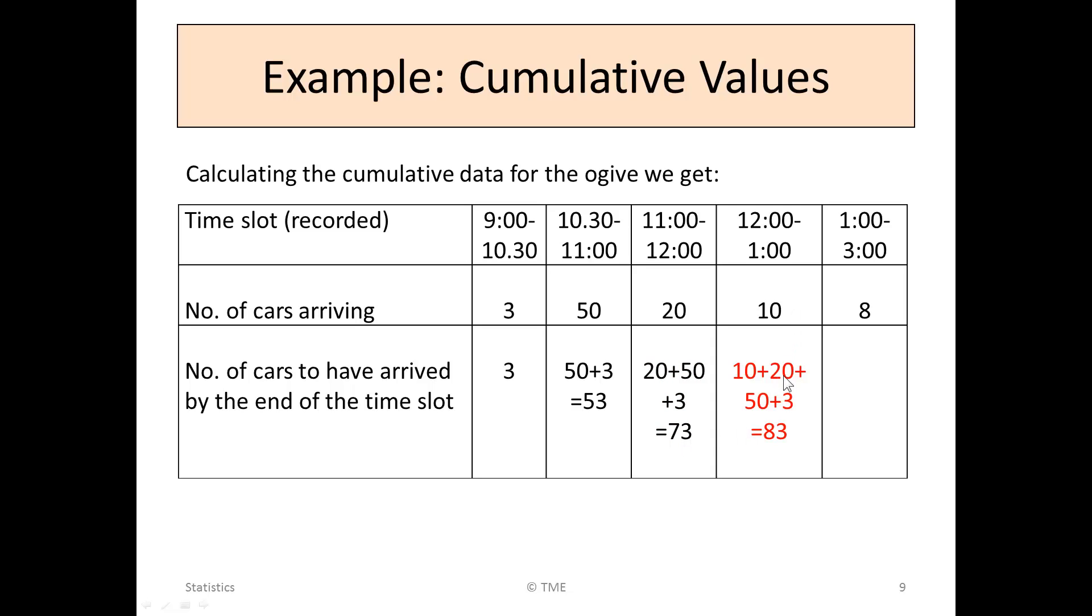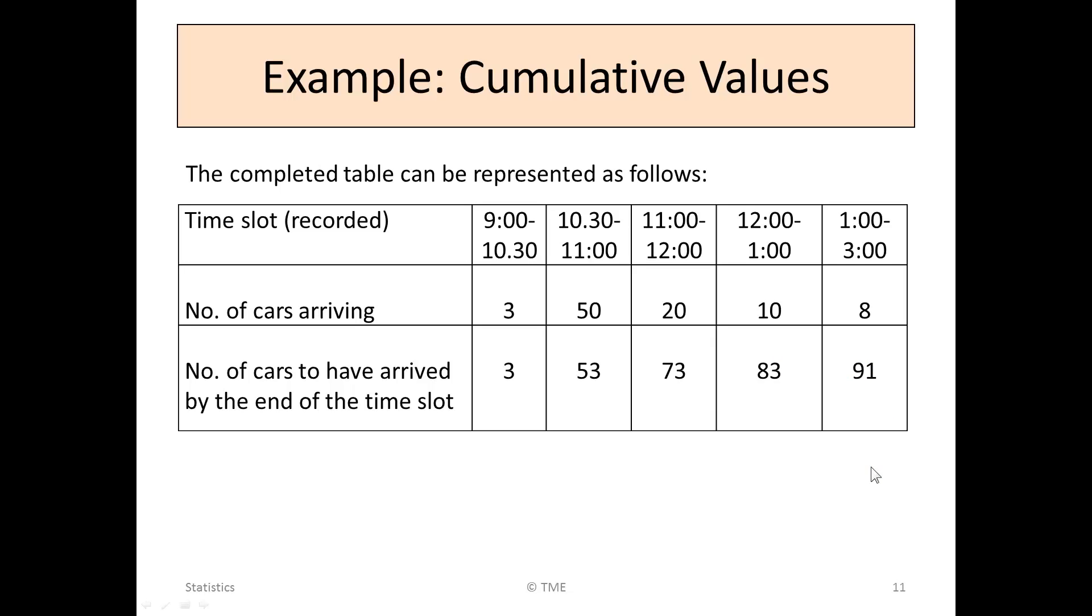Likewise, by 1 o'clock, we have an additional 10, or 83 cars have arrived. And by 3 o'clock, an additional 8, or 91 cars have arrived. We can re-present the data, the cumulative data for each of the time periods. By the end of 10:30, we have three cars. 11, we have 53. 12, we have 73. This is cumulative data. With this data, we can now construct the cumulative frequency graph, or ogive, using the data. We have everything we need to do it.